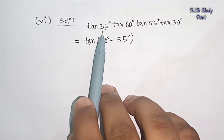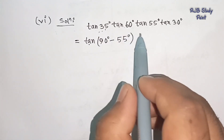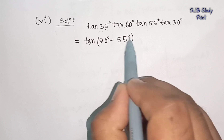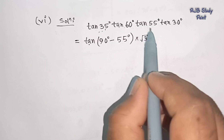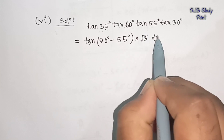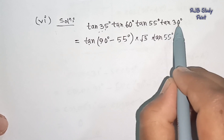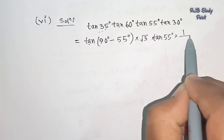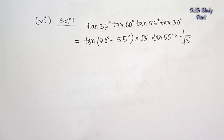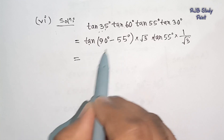So I get 35 degree. I also write tan 60 degree. Tan 60 degree means root 3. Similarly, tan 55 degree and tan 30 degree — tan 30 degree means 1 divided by root 3. Next, tan(90 minus A) means what? A means 55 degree.